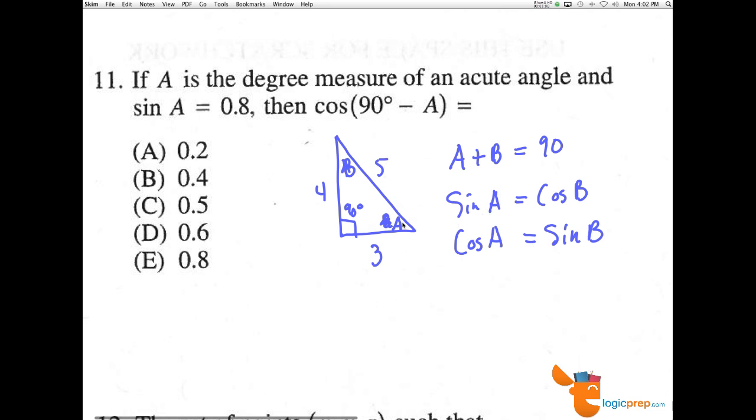Here, the sine of A, 0.8, which is equal to 4 fifths, the sine of A equals 4 over 5, the same way that we take the cosine of B here, adjacent over hypotenuse, the cos of B equals 4 fifths.